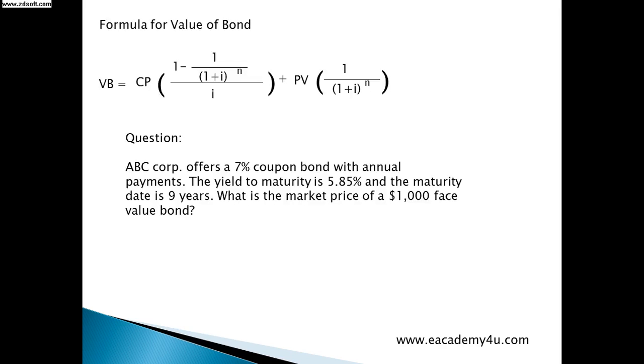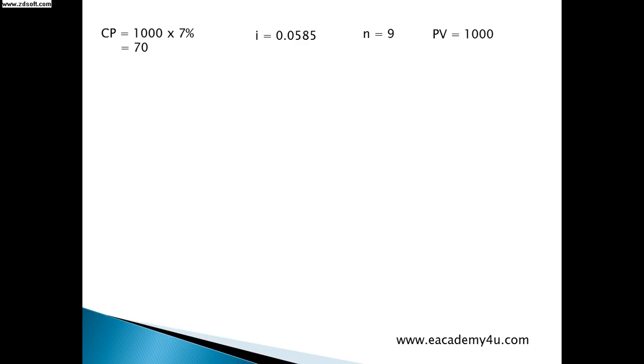Coupon price is 7% and then the real value of a bond is $1000. So coupon price equals to 1000 multiplied by 7% which is we must multiply coupon percentage with the present value of the bond, and then we will get 70. That's our coupon value. And then i equals to 0.0585 which is 5.85%. And number of years which is n or number of payments is 9 years. And then present value is 1000.